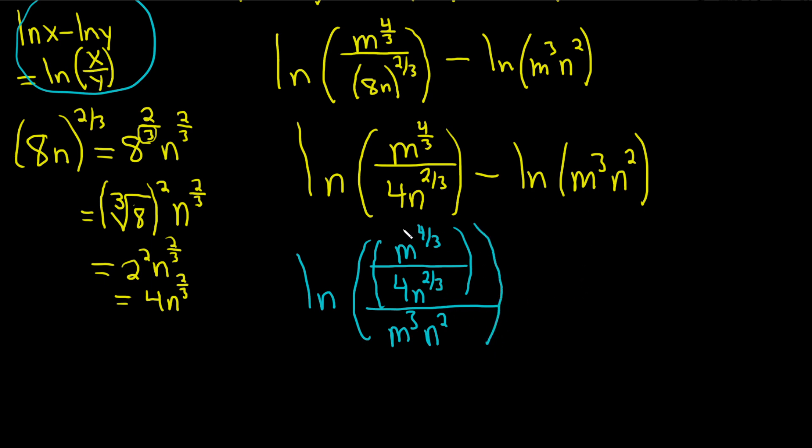Looks like a beast, doesn't it? So that's because it is. So how do you deal with this? So we're taking this entire piece here and we're dividing it by this. I'll write it here on the side. We have m to the four-thirds over 4n to the two-thirds.